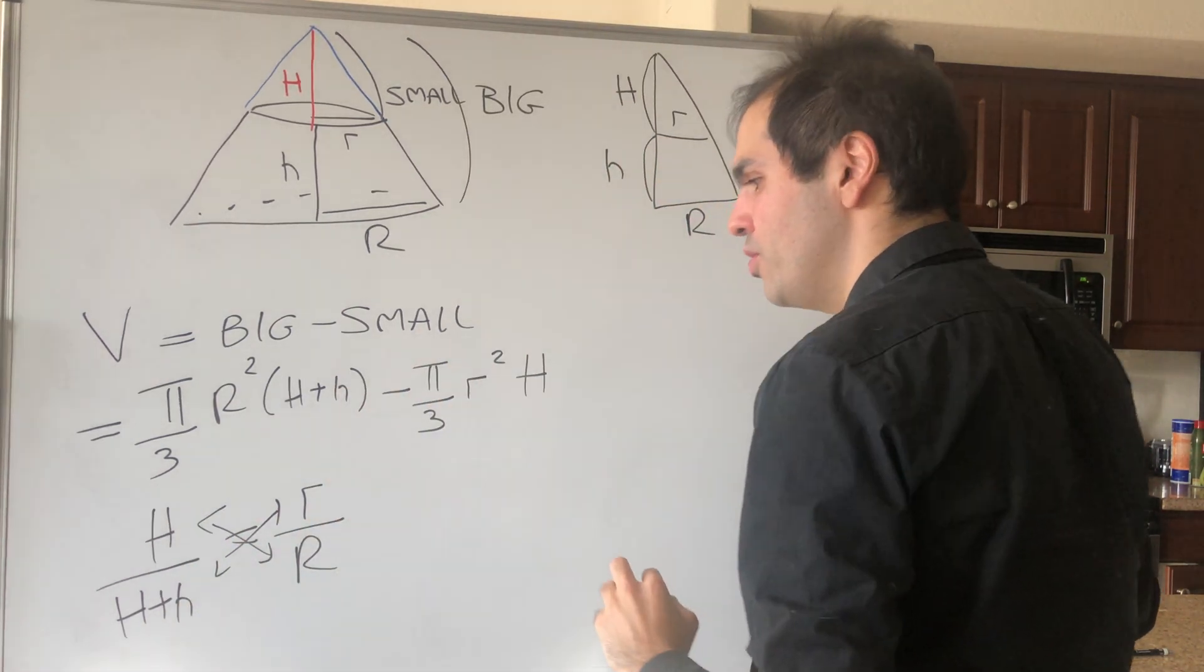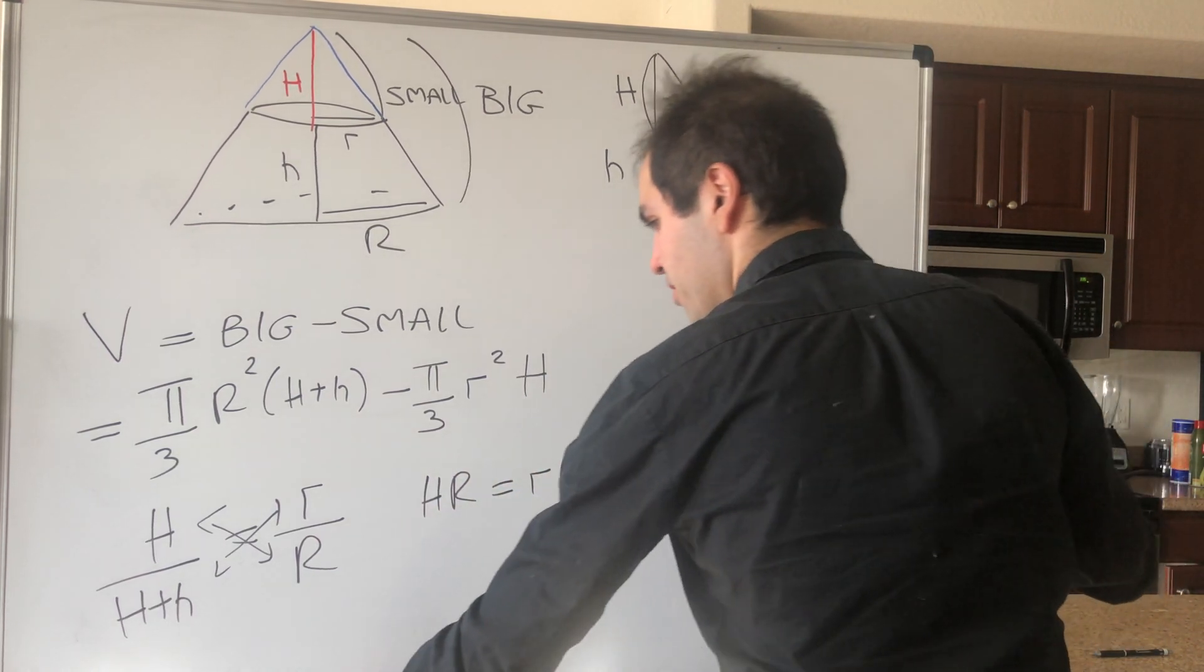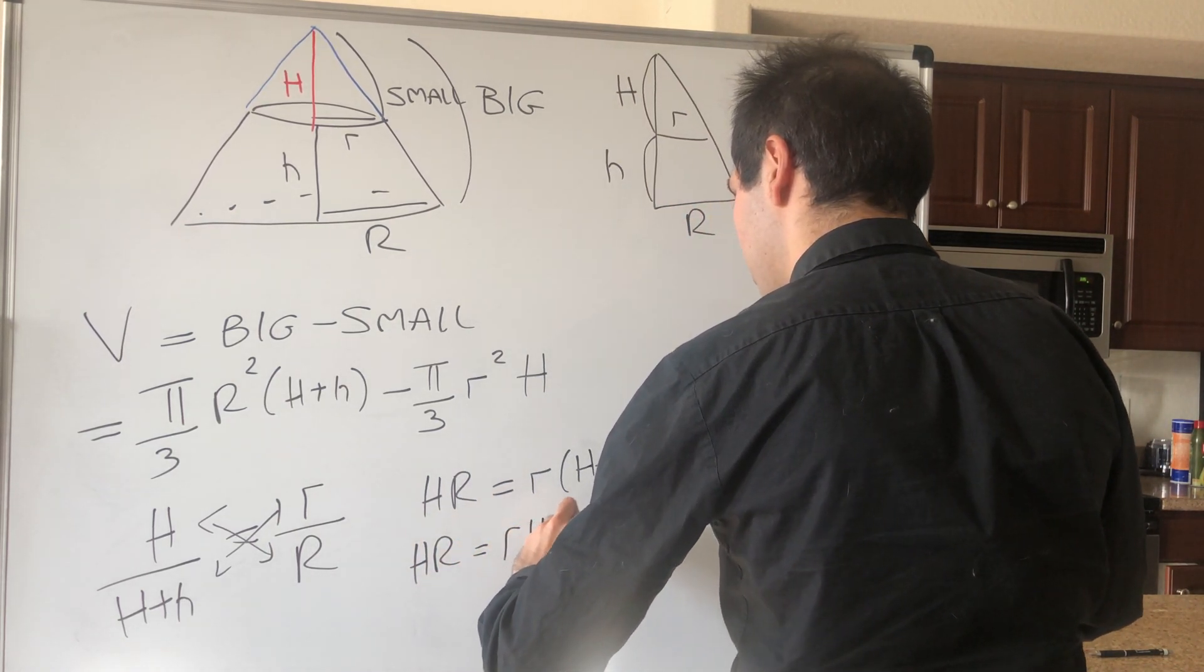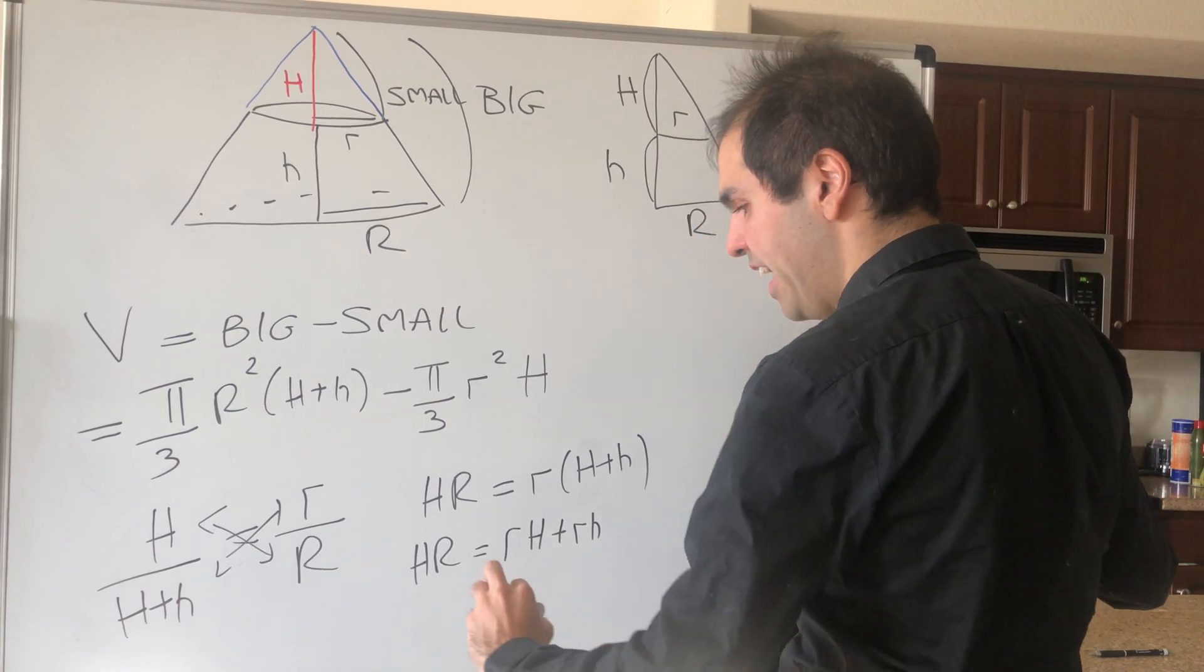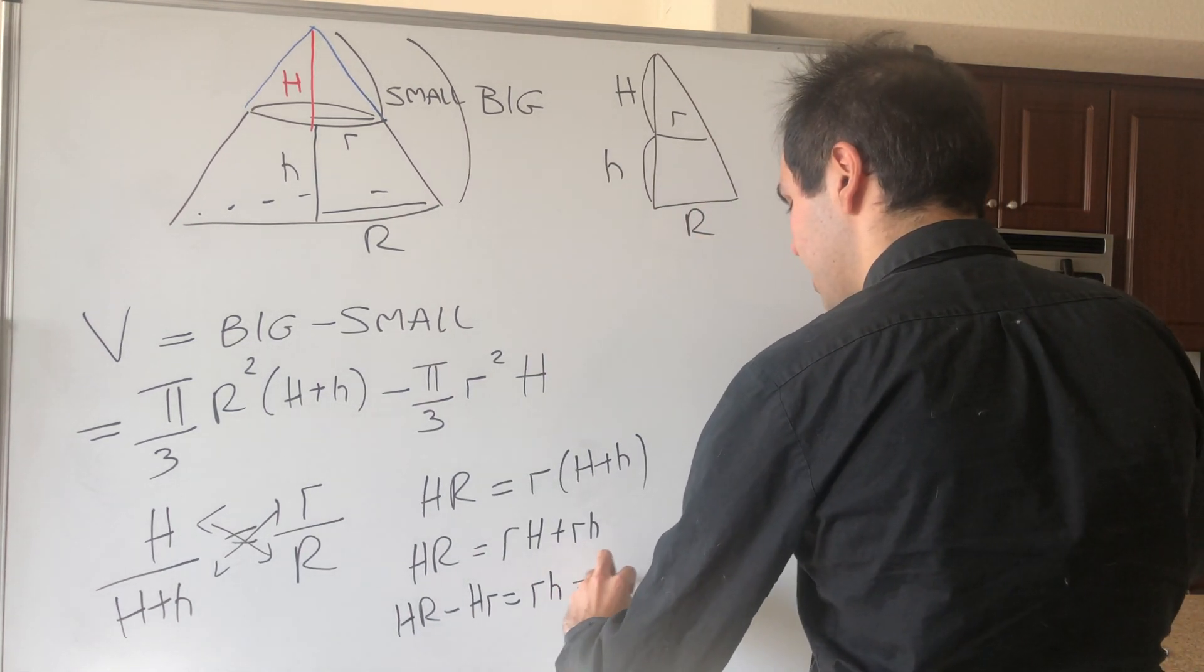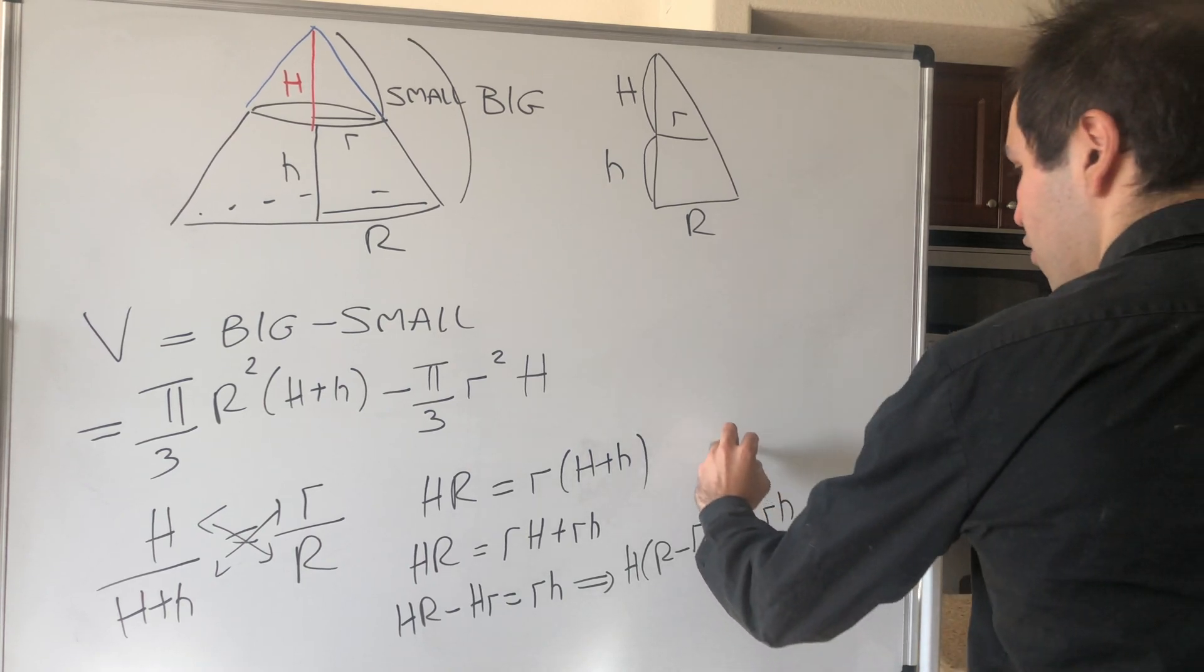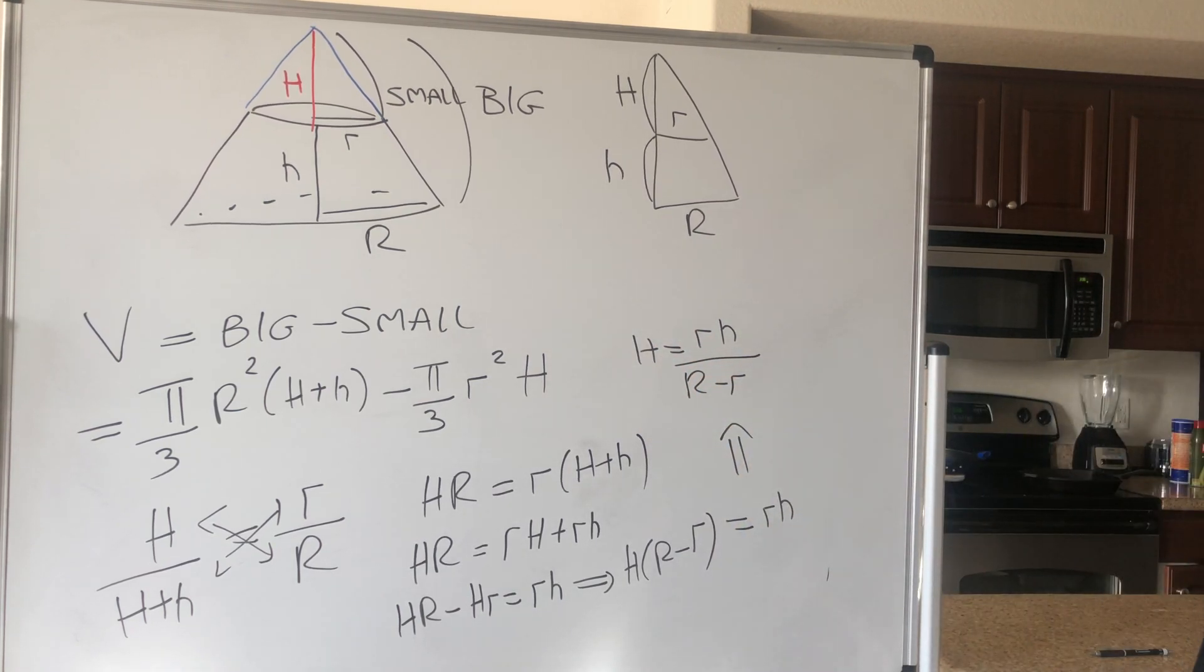And then, cross-multiply. Then what do you get? You get that hR equals R times H plus capital H. And then, hR equals RH plus rH. Quite beautiful in some sense. And then, you can put the H on the left-hand side, so HR minus rH equals rh. And then, basically, H times (R minus r) equals rh. And then, in the end, you can just solve for H. So capital H is rh over (R minus r). Which is interesting, because it gives you sort of the same factor we found before. And so, in the end, we have our capital H: rh over (R minus r).